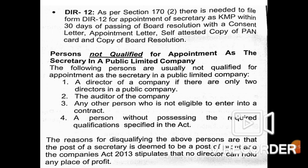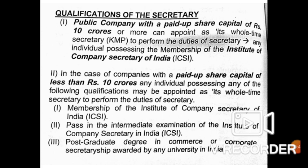Who is disqualified from being appointed as Company Secretary in a public limited company? If the company has only two directors, a Company Secretary is not appointed. The existing auditor of the company cannot be appointed as Company Secretary. Any person who is imprisoned, insolvent, or otherwise ineligible is disqualified. A person without the required qualification is also not eligible.